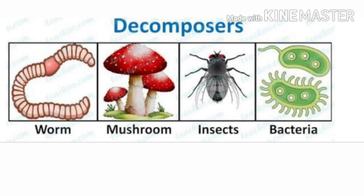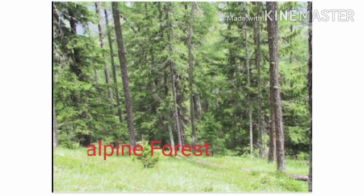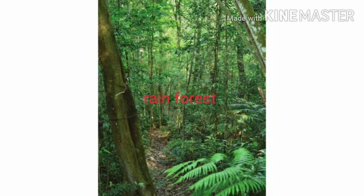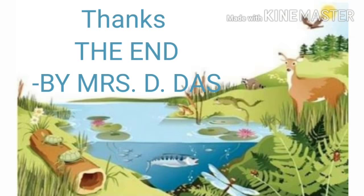Decomposers — fungi and bacteria — help to form humus, the dead organic matter in the soil. Abiotic factors include humidity, light, altitude, wind speed, and temperature, which affect the flora and fauna found in a forest. Conifers and furry animals are found in mountainous or alpine forests in cold climates, while broad-leaf deciduous trees are found in rain forests.